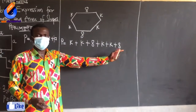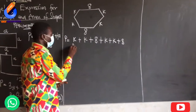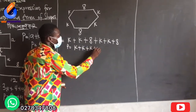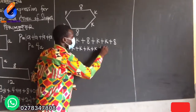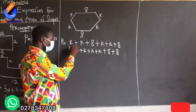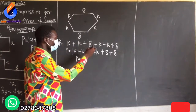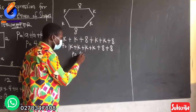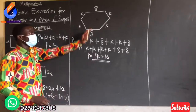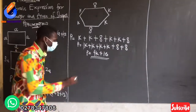Now when you look at this expression, you can see an alphabet — a variable — and a number. There is no written number in front of K, so that means there is one, but we don't write it. So I can say one plus one plus one plus one gives me four. So this gives me 4K, plus eight plus eight, which is sixteen. This becomes the perimeter for this shape: 4K plus 16.